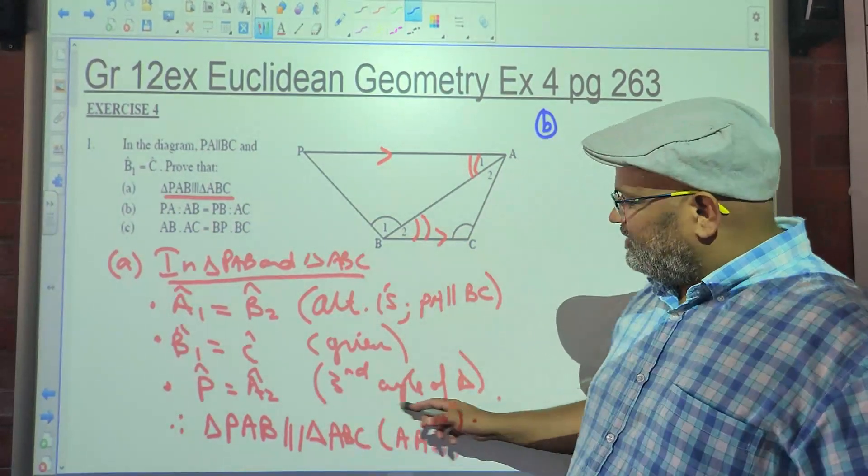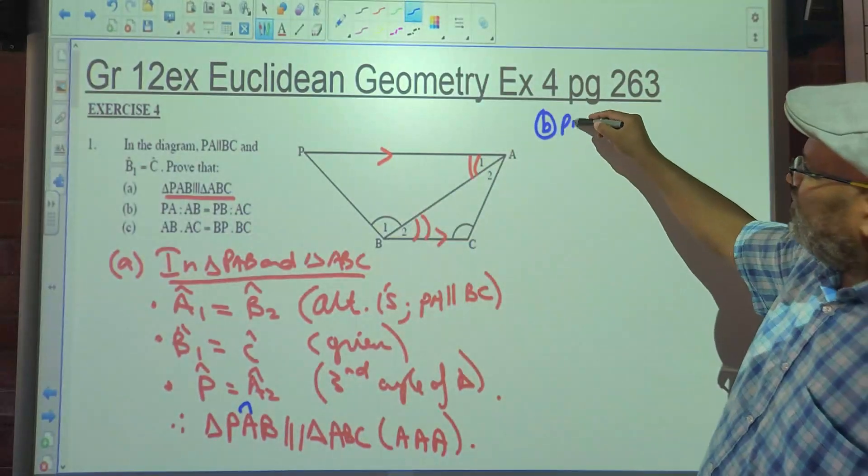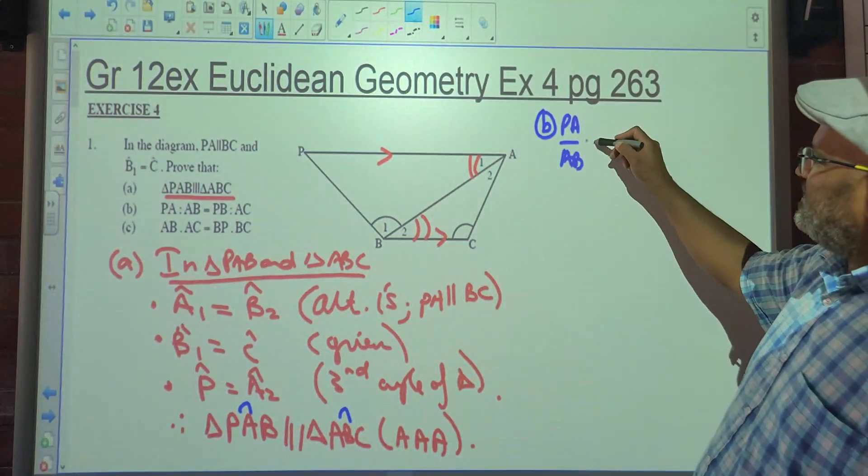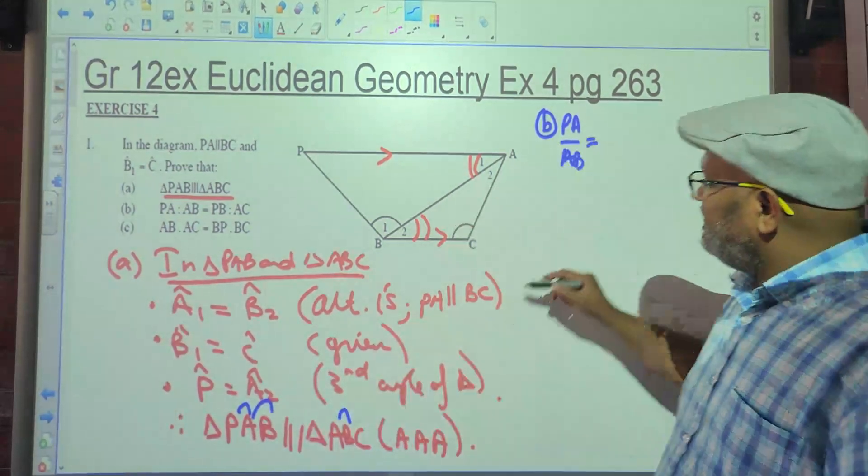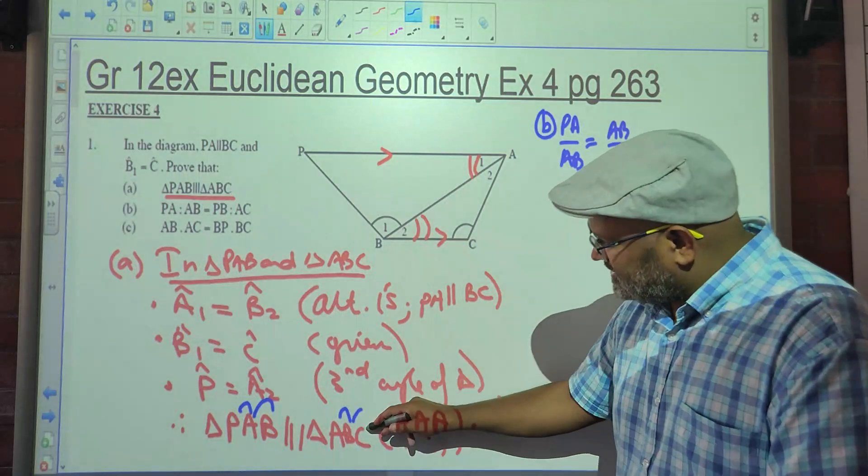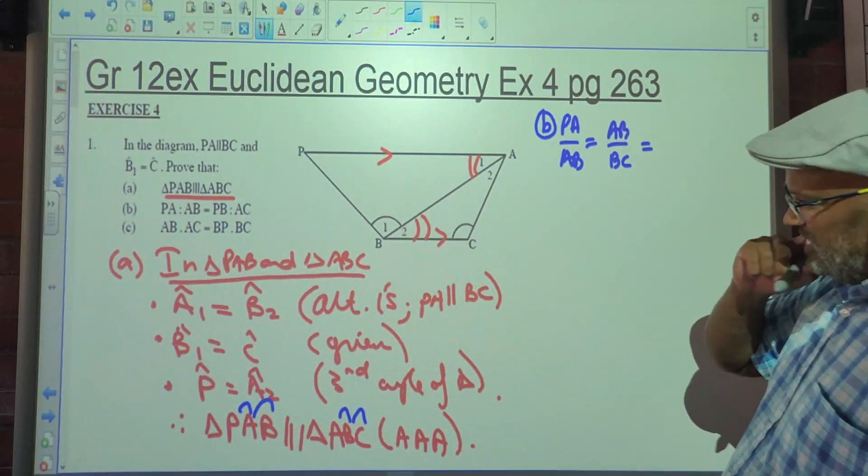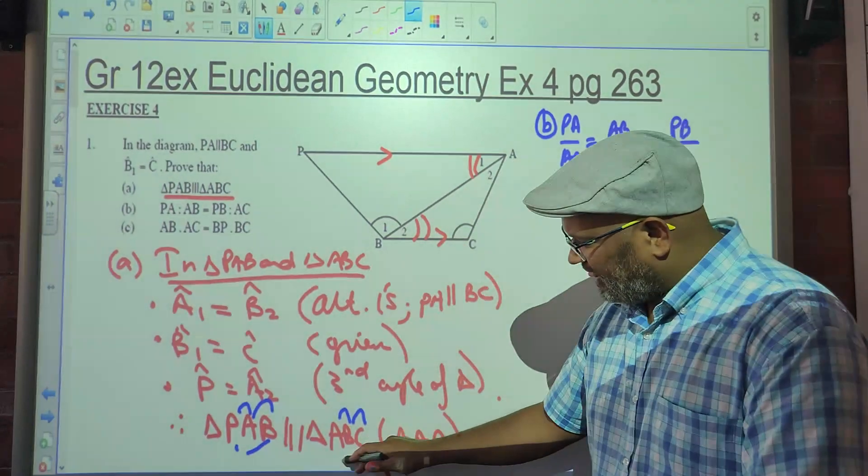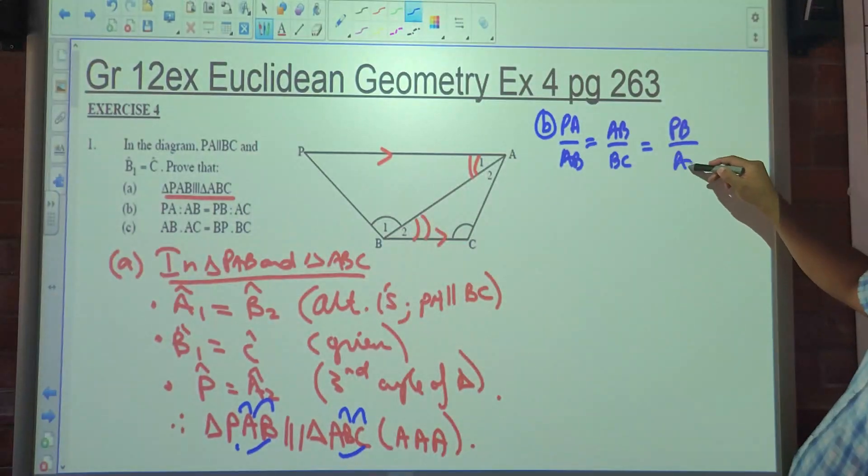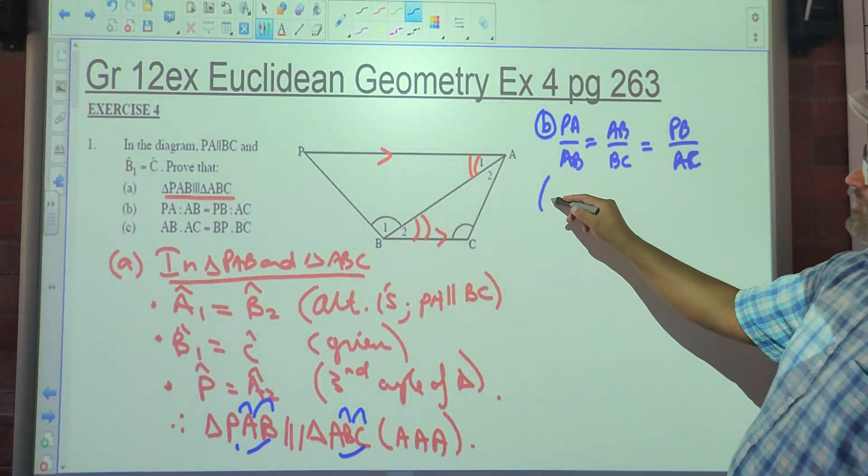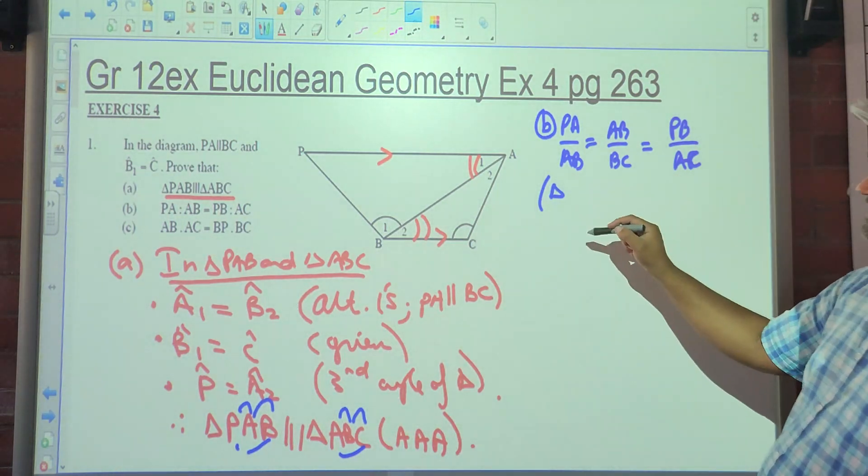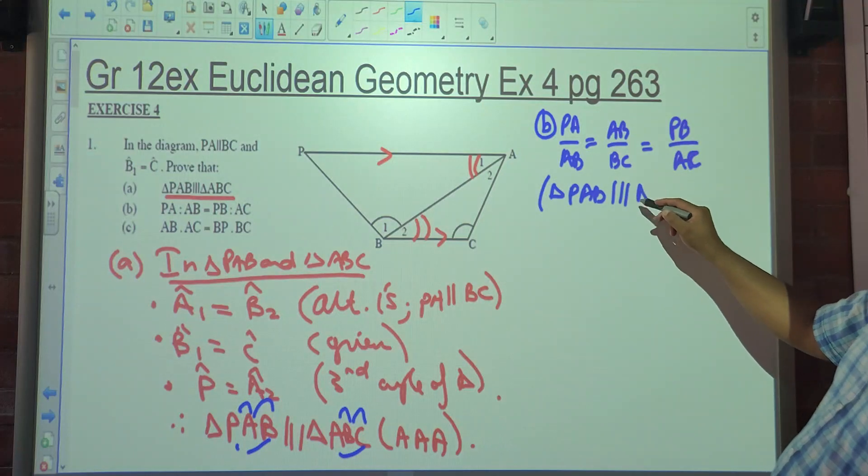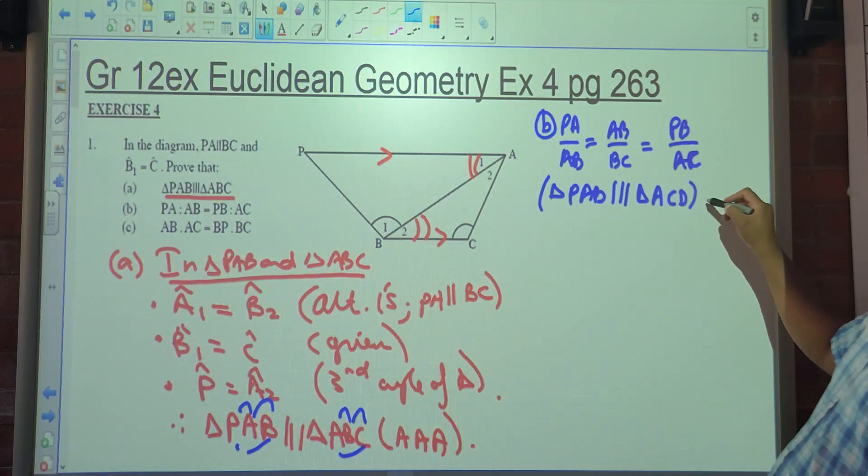So we see from here, we're going to say that PA over AB is equal to PB over AC. It's proven.